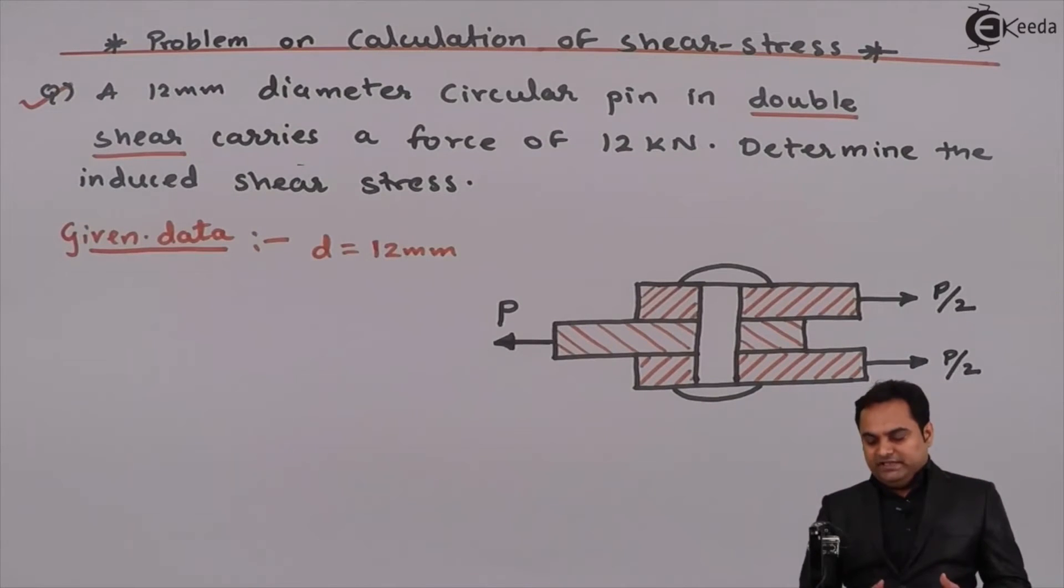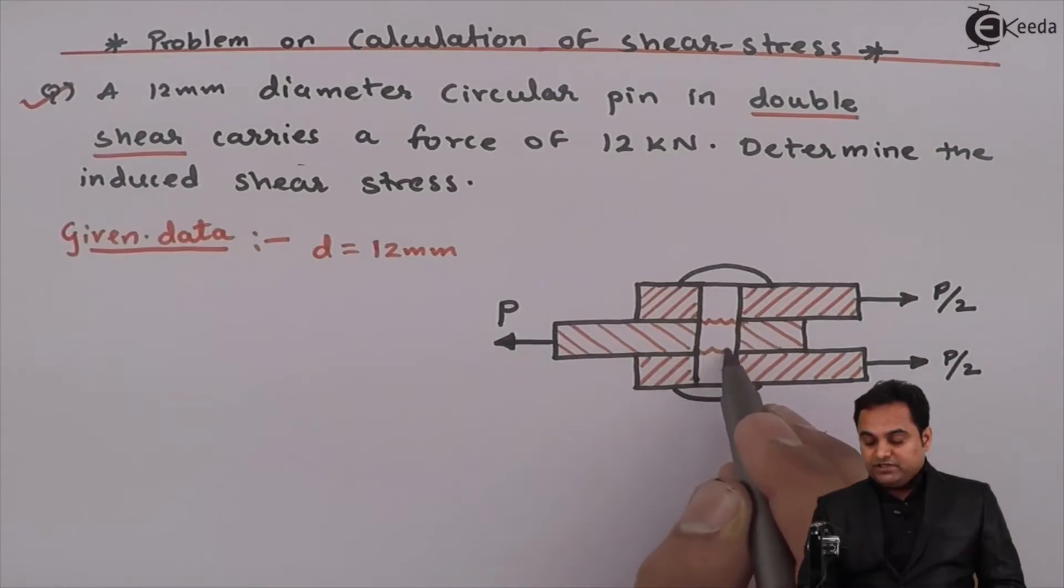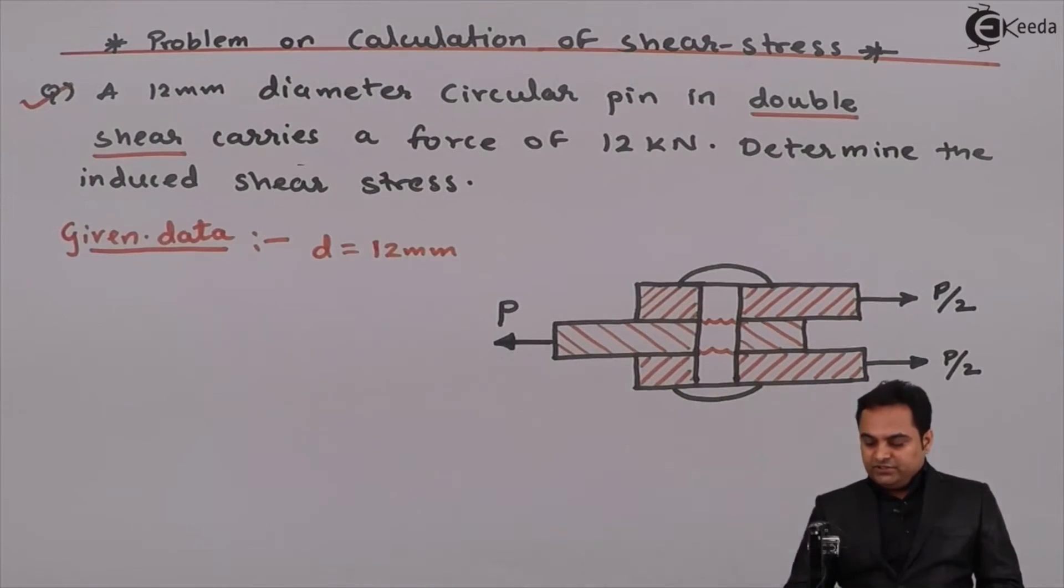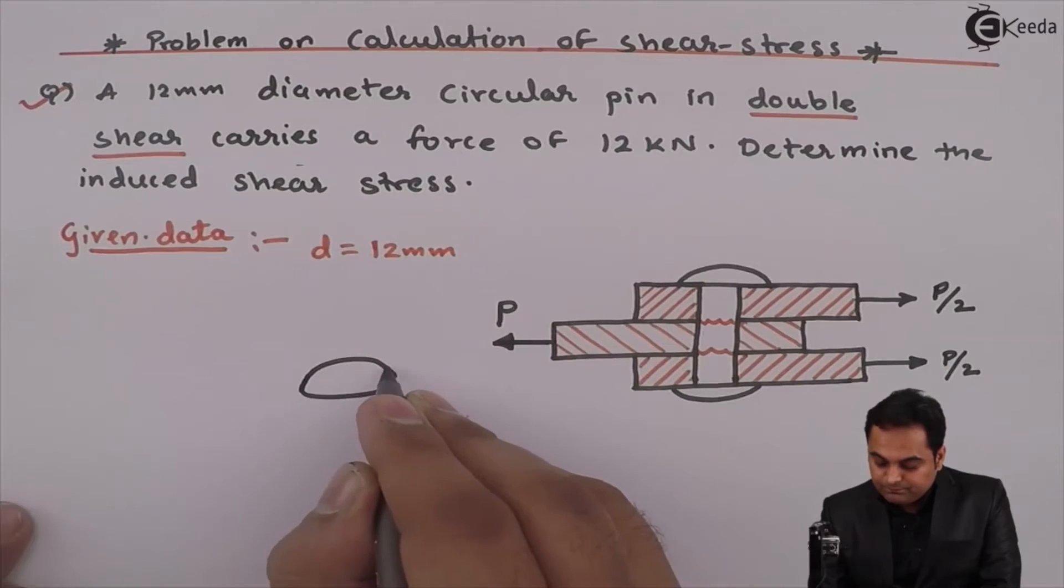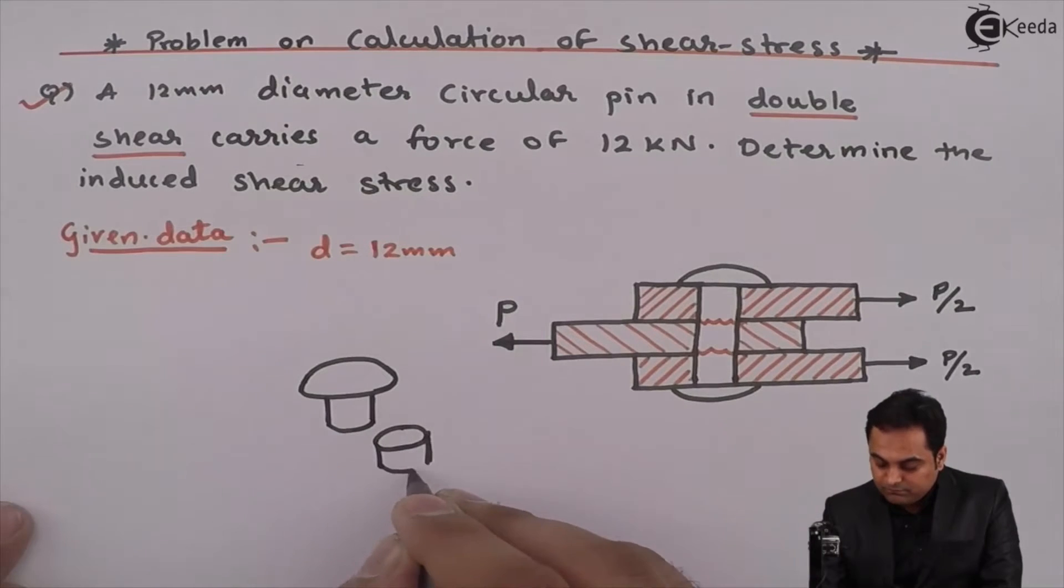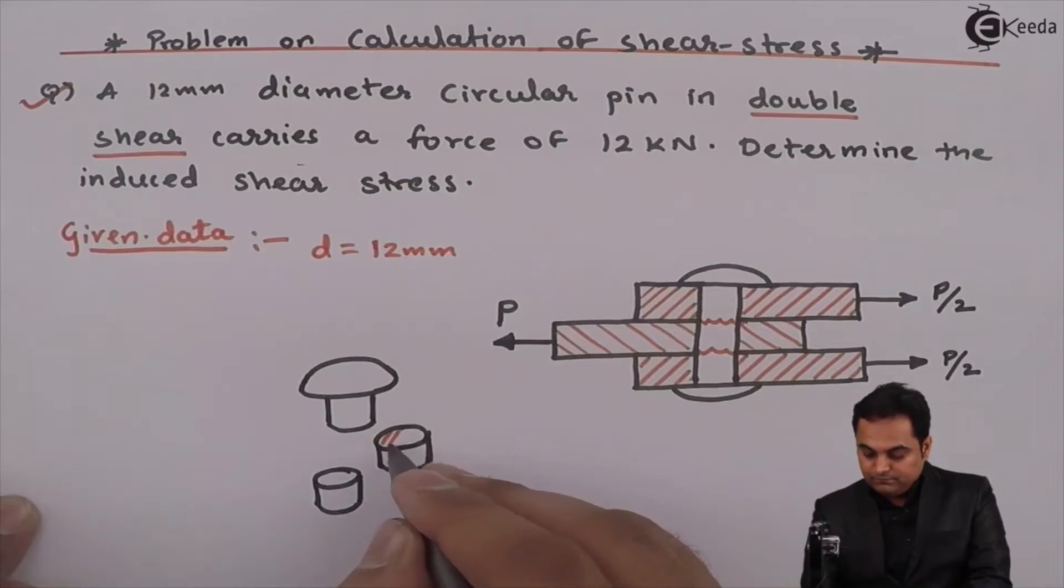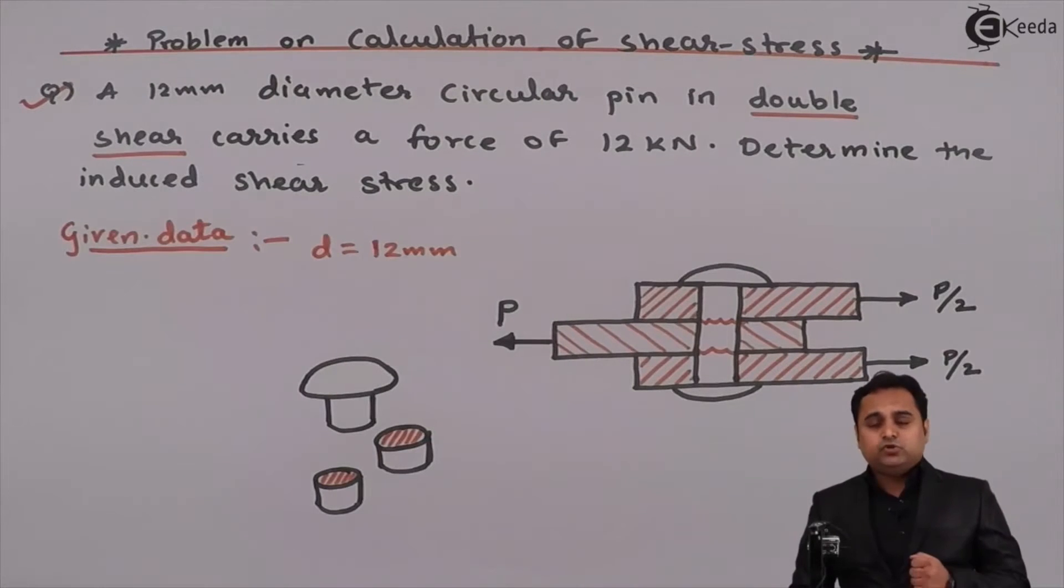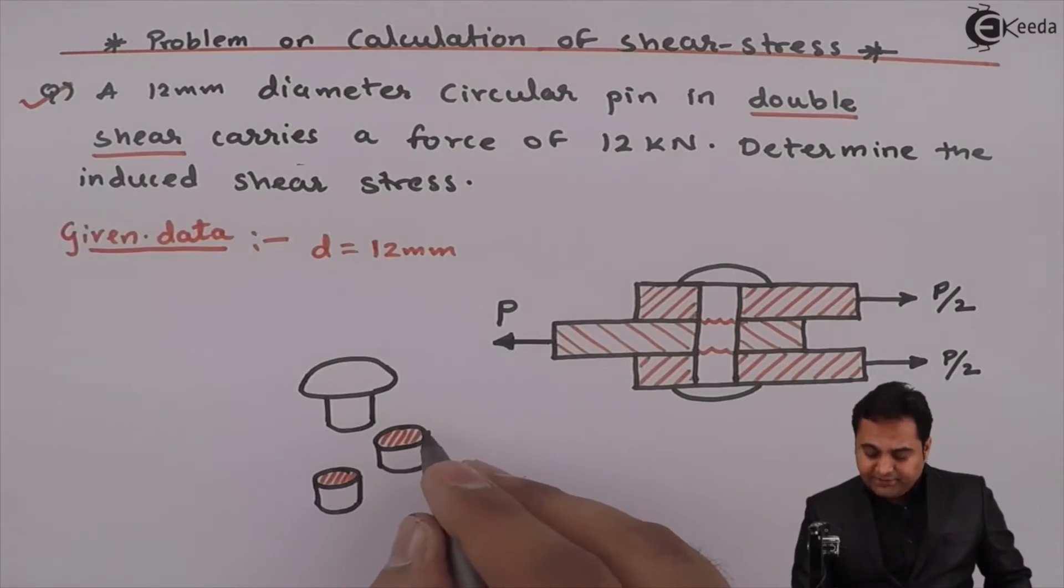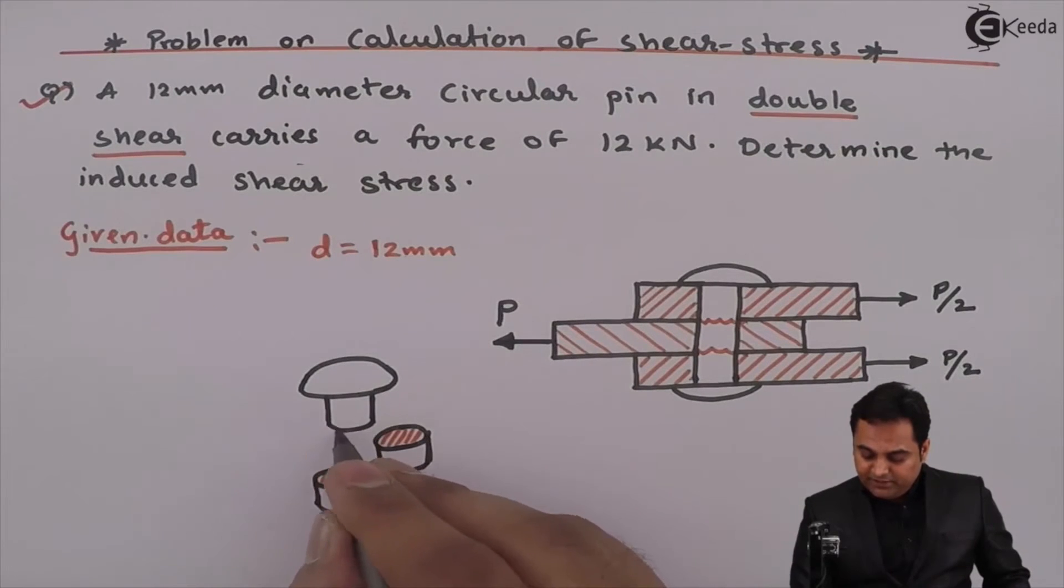Now because of these two unequal directions, what can happen is this pin, it can break at the junction of the plates like this. And when it breaks, here we have three pieces. So I can draw the diagram and explain it in a better manner. So this pin would be breaking in this form. And how many areas do we have here? First, I am getting an area here. And similarly, there would be an area here as well.